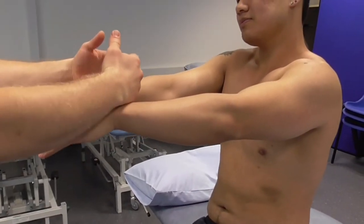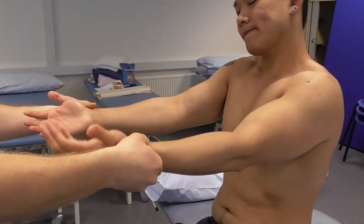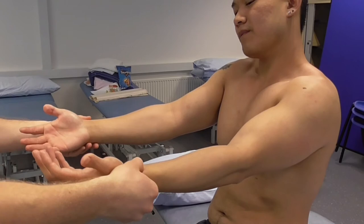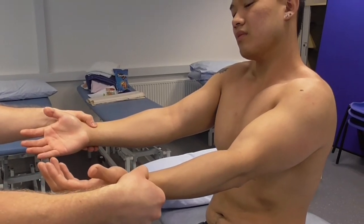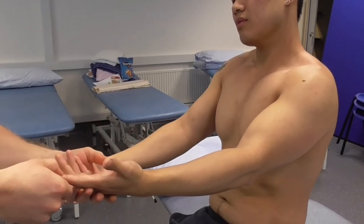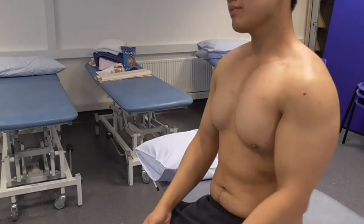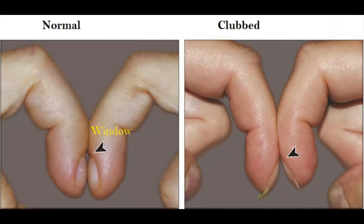Next I will examine the temperature of the hands, radial pulse, and capillary refill time. You can also examine for finger clubbing — just ask the patient to put two fingernails together. Finger clubbing is associated with a number of diseases, mostly of the heart and lungs.